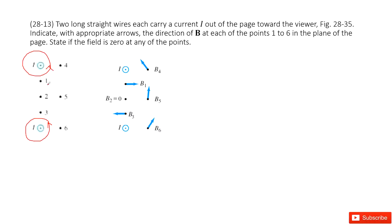Now let's look at point 1. Point 1 is much closer to wire 1 and far from wire 2. So it is more affected by wire 1, and the magnetic field follows this way—this is B₁.